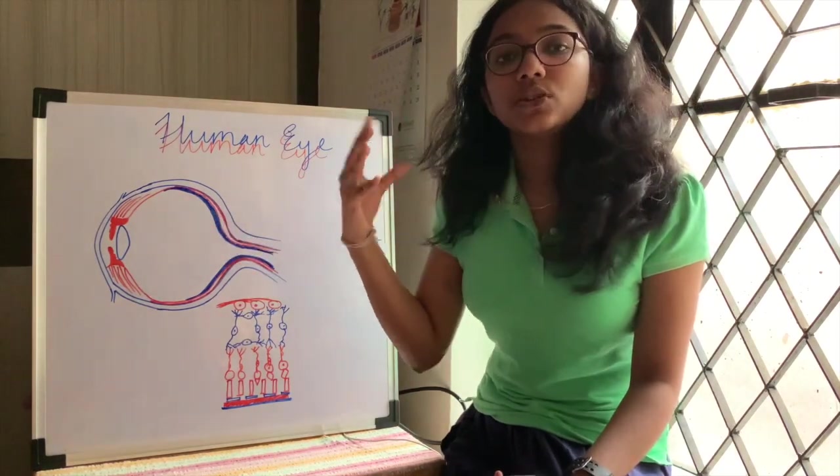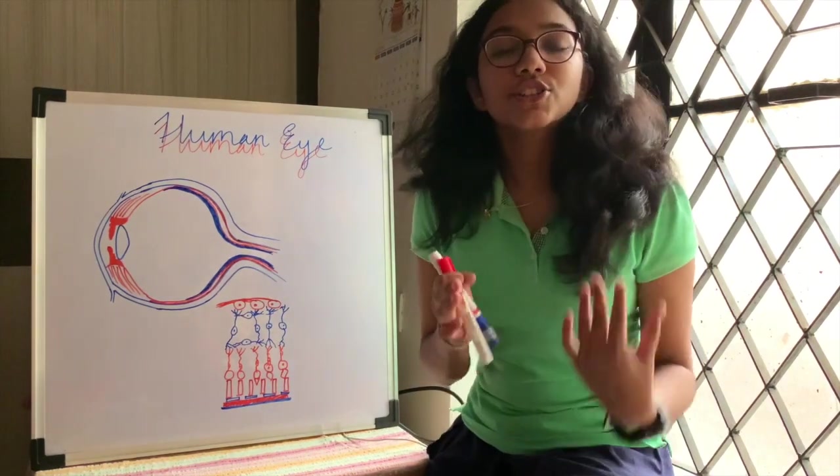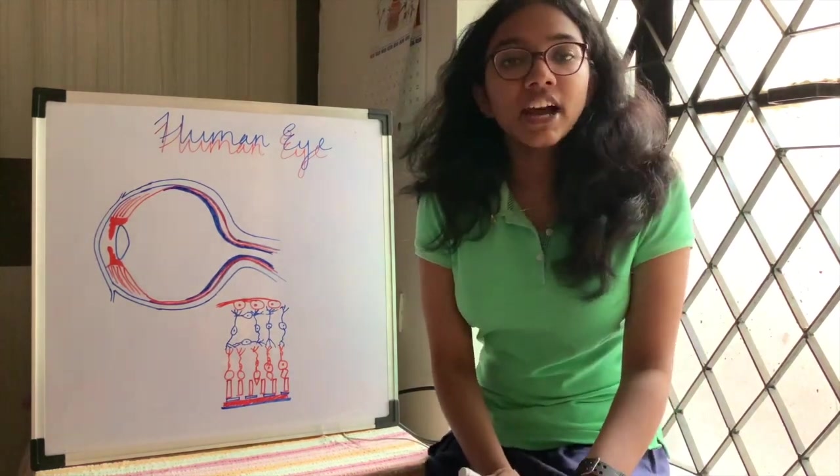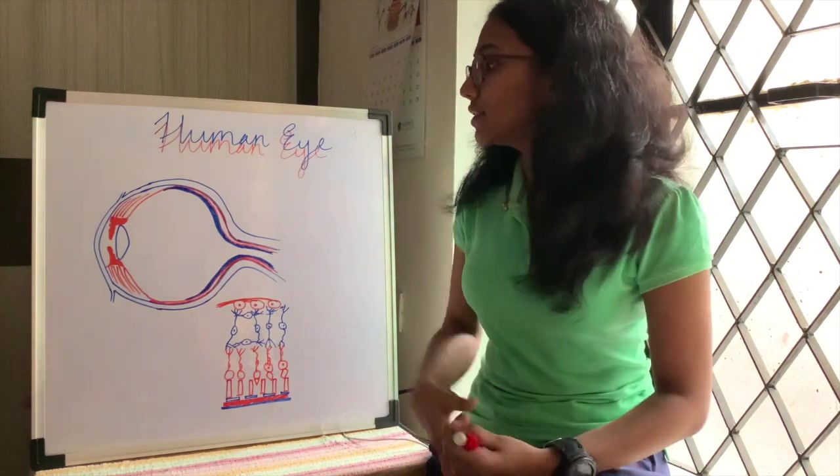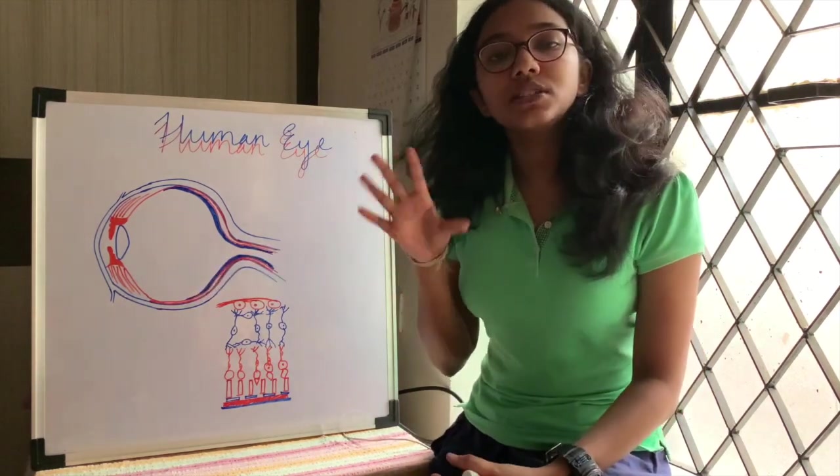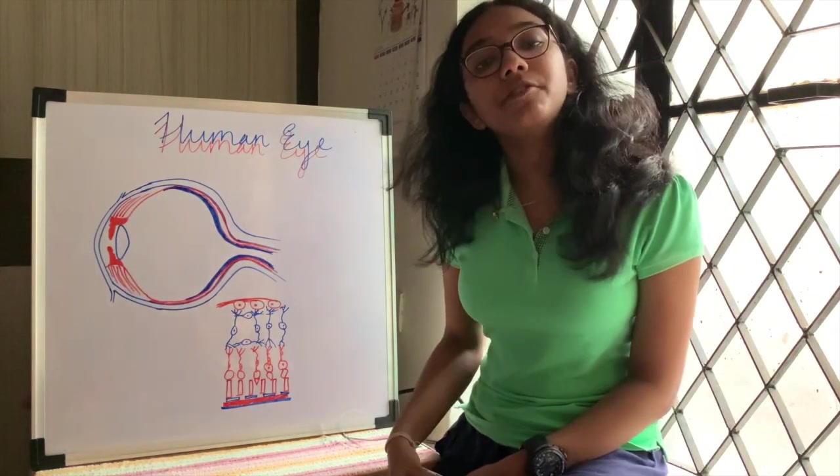We're going to learn about its structures now. When we talk about the human eye, it can be divided into two basic parts: one has a protective function, and the other is the eyeball. Our eyeball is the most biological part of it. The ones which have a protective function are again divided into some subparts.